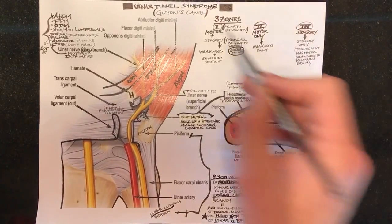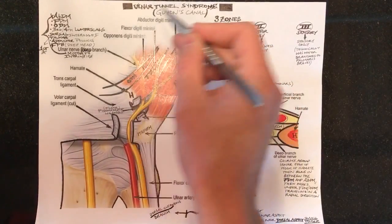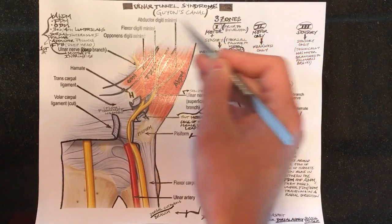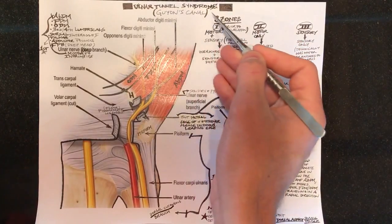Let's talk about ulnar nerve compression at the level of Guyon's Canal, which should really be called ulnar tunnel syndrome, but it is more frequently referred to as ulnar nerve compression at Guyon's Canal.